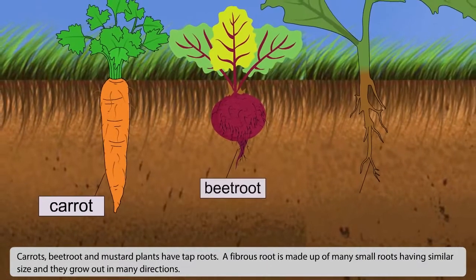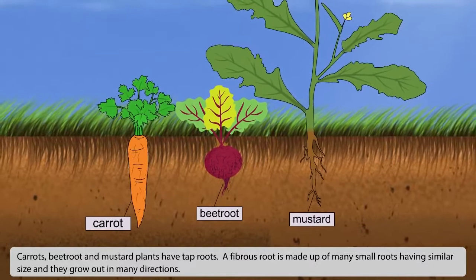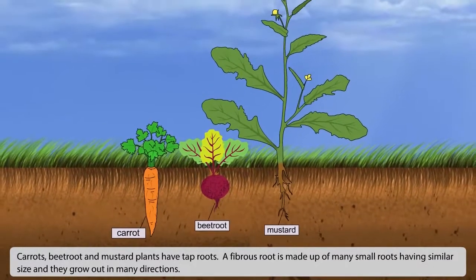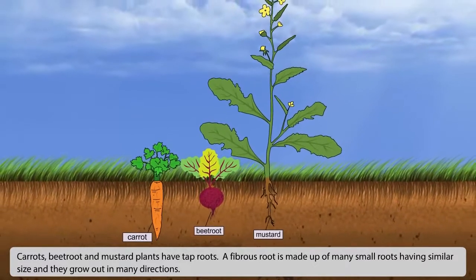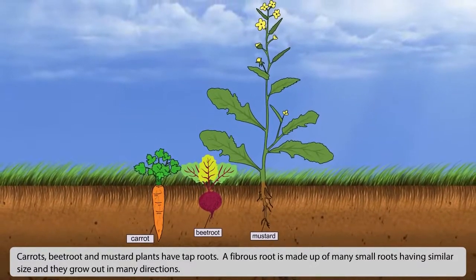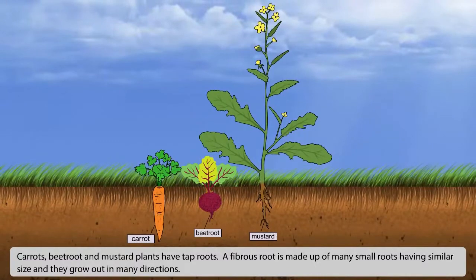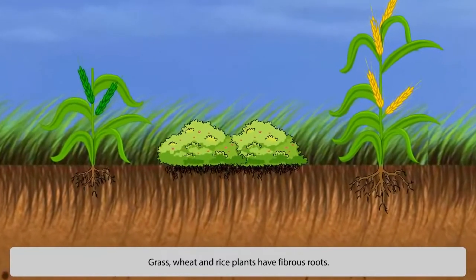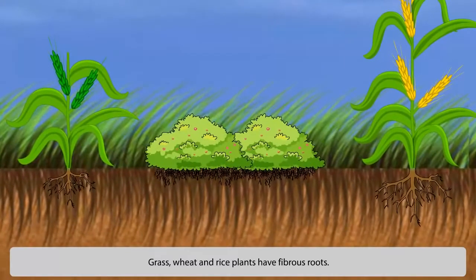Smaller root branches come out from its sides. Carrots, beetroot and mustard plants have tap roots. A fibrous root is made up of many small roots having similar size and they grow out in many directions. Grass, wheat and rice plants have fibrous roots.